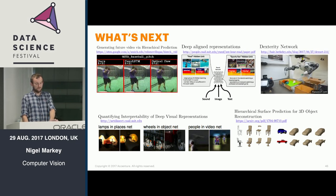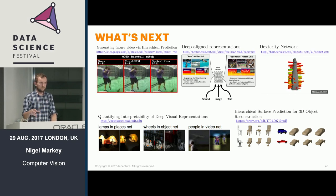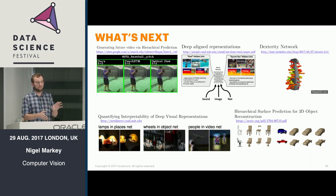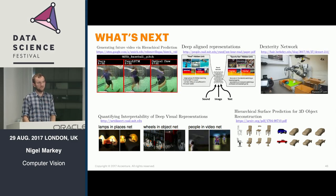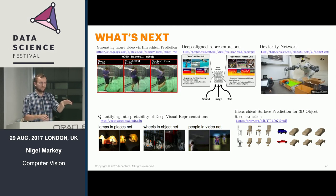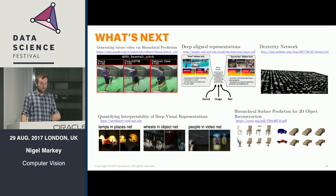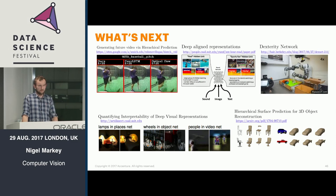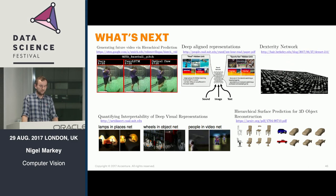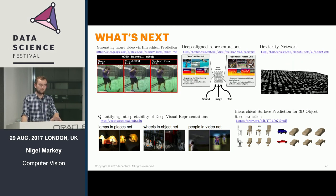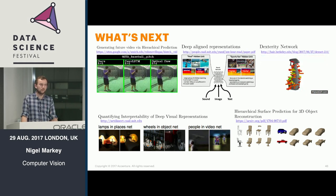These are all insights into ongoing research — you can imagine the Dexterity Network on a production line, or the future-generation model applied to real scenarios. The future generation paper is clever because the future is inherently uncertain — they do really clever stuff picking the most certain future versions of situations rather than just averaging, presenting multiple possible scenarios and the most probable one. A client asked me for Minority Report-esque prediction of accidents in a retail environment, and the very best you'd get is a roughly generated version of the future about a second in advance. The accuracy falls off so quickly it's just not there yet.